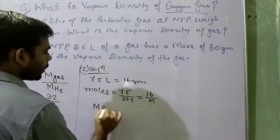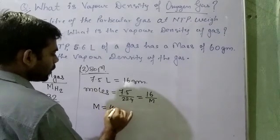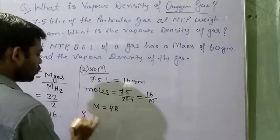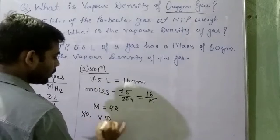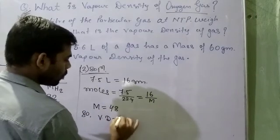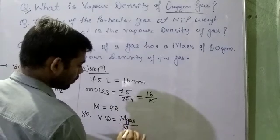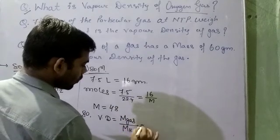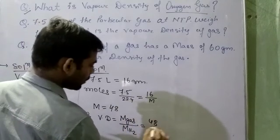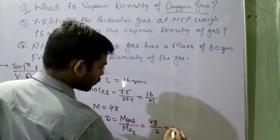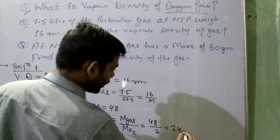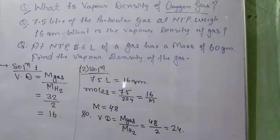We find out molar mass from this equation. We will get molar mass equal to 48. So vapor density equal to mass of gas upon mass of H2. And that will be 48 upon 2. So answer will be 24. And this is how we calculate the vapor density of the gas.